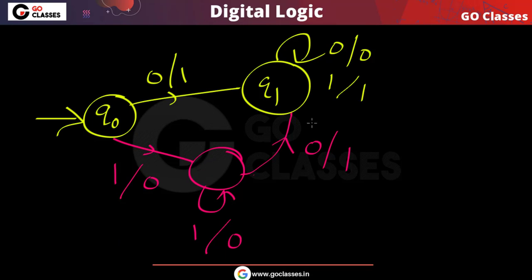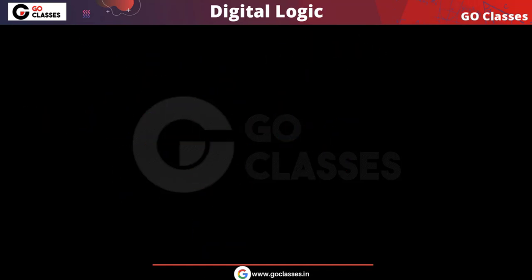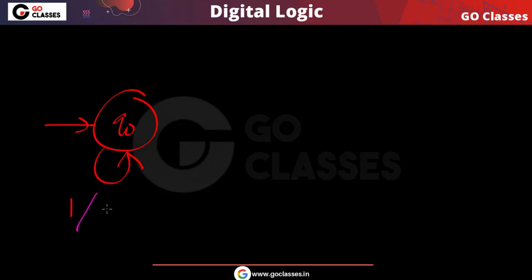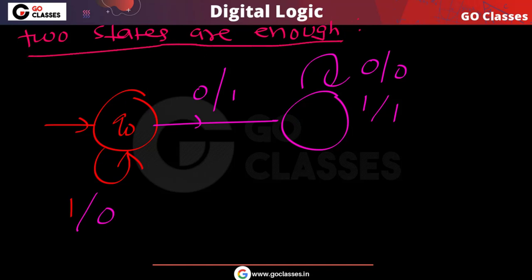This is your Mealy machine to increment a number by 1. You can check it: give this input to the machine reading right to left and verify the output. Also note that we can actually do this using just 2 states — 2 states are enough. If the first symbol is 1, make it 0; any number of subsequent 1s, make them 0; the first 0 becomes 1; and everything else is as it is. So 2 states are sufficient.